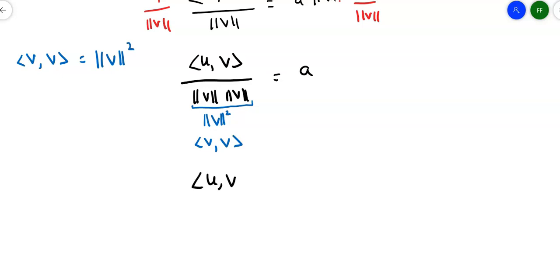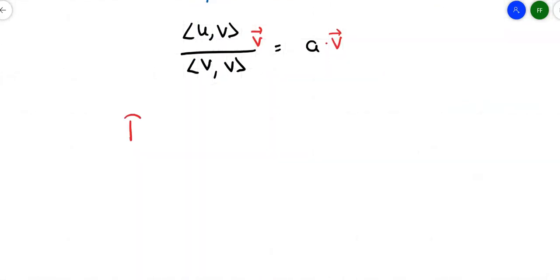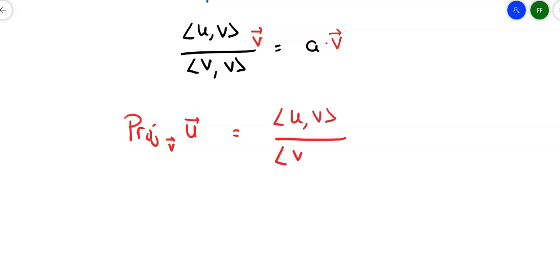So let's write this as: the inner product of u and v over the inner product of v and v equals a. But remember, I wanted a times the vector itself — this scalar a tells me how much of the vector I want projected. So multiplying not just by the scalar but by the vector itself, the formula for the projection of u onto v is the inner product of u and v over the inner product of v and v, times the vector v. The first part gives the scalar, and then I multiply the scalar times the vector to get the projection.